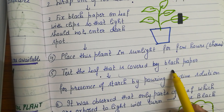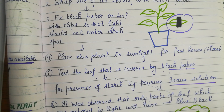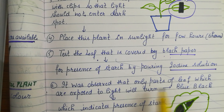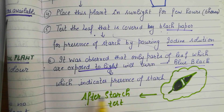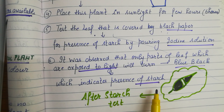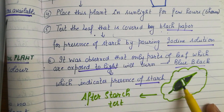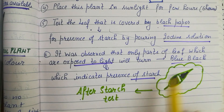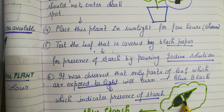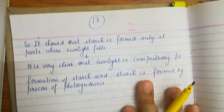Then test the leaf covered by black paper — pluck it and test it for the presence of starch using iodine solution. It was observed that only the parts of the leaf which were exposed to light turned blue-black, indicating the presence of starch, meaning photosynthesis was performed only in those areas where sunlight was present. The portion covered with black paper did not show any change to blue-black color after the starch test.